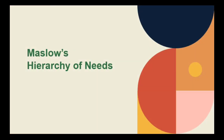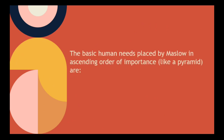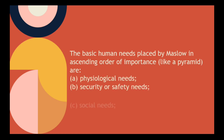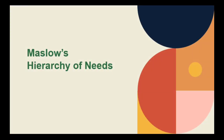Let's proceed to Maslow's Hierarchy of Needs. Maslow's Hierarchy of Needs identifies the basic priorities of every consumer. Maslow saw human needs in the form of a hierarchy, ascending from the lowest to the highest. He concluded that when one set of needs is satisfied, that kind of need ceases. Let us watch a video presentation prepared by Sprouts to better understand Maslow's Hierarchy of Needs.